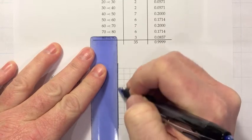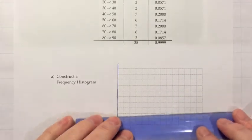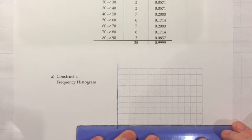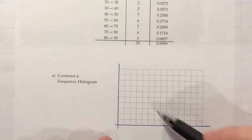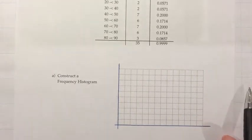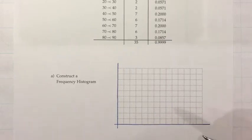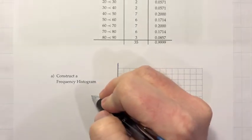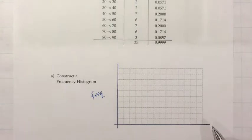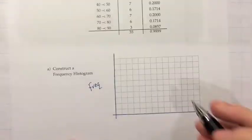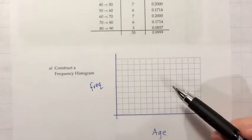We place the vertical axis on the far left — the only exception would be if class descriptions involve negative numbers, which wouldn't happen for age. The horizontal axis goes across the bottom. We want to label the axes: the vertical will be frequency and the horizontal will be the class variable, which in this case is age.